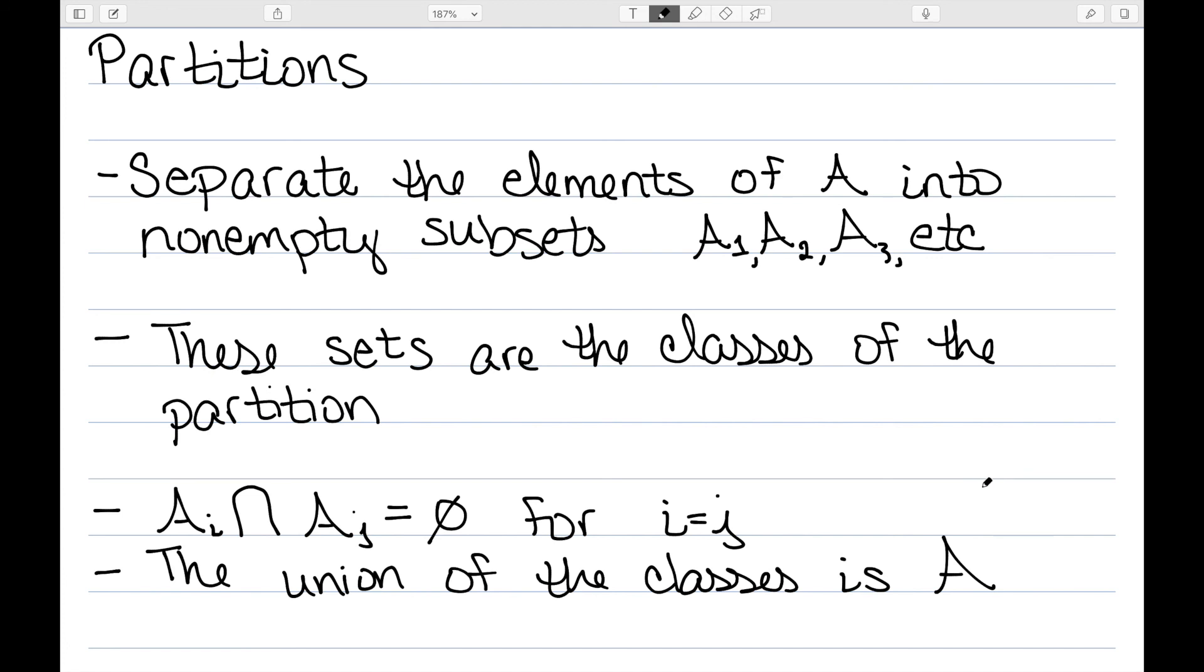The second thing: the union of these classes is A. So if I take the union of all of these sets, all of the classes, I should be able to get the entire original set A.